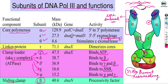The sliding clamp is the beta subunit and it is the main processivity factor. DNA Polymerase 3 is the main replicating enzyme because it contains the beta clamp subunit, which helps DNA Polymerase remain bound to the DNA strand for a longer duration. As long as DNA Polymerase is bound to the DNA strand, replication can continue — and holding it there is the job of the beta clamp.